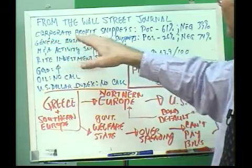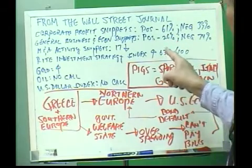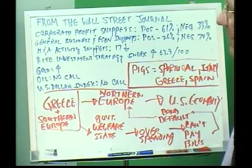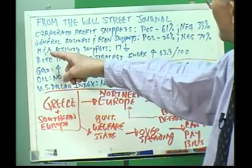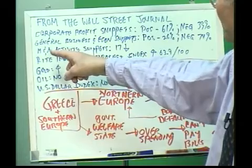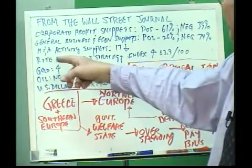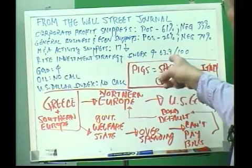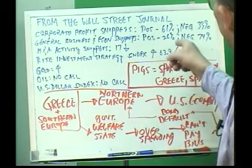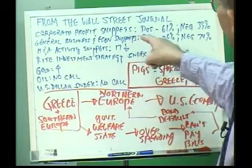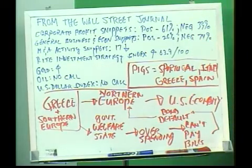However, the general business and economic snippets — the positive in the month of October — was only 26%. The negative was 74% in the total headline activity of the snippets. Also showing a downward spiral is the M&A activity snippets, down to 17. The overall investment strategy put out by The Right Report is down from the 70% range into the mid-60s, at 63.9%. However, these general business and economic snippets have really gone down in the last two months — September and October — and have not fared very well.